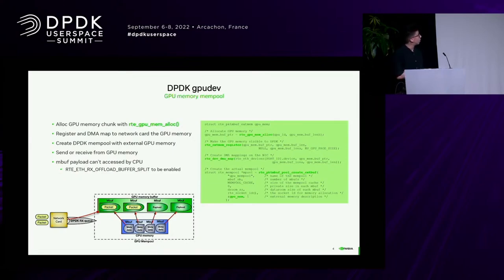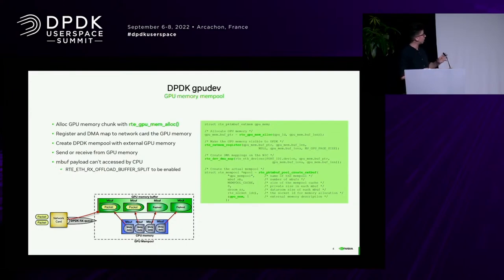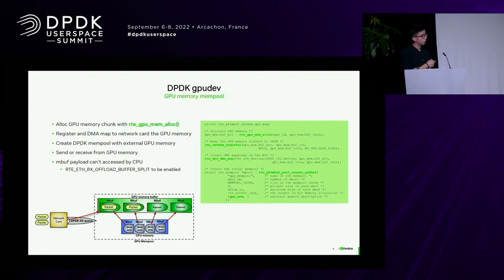The final effect is this: you have a DPDK mempool where MBUFs are external MBUFs. The MBUF header — the metadata part — resides in CPU memory, so the network card can access and modify it, and nothing in the DPDK control path changes. But the actual payload of the MBUF resides in GPU memory. So if you attach this DPDK mempool to the network card's receive queue, when the network card receives packets, they will flow directly into GPU memory.